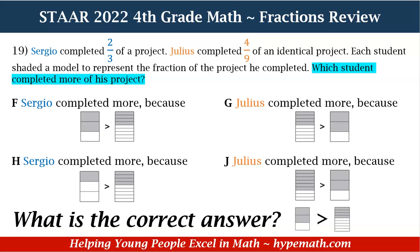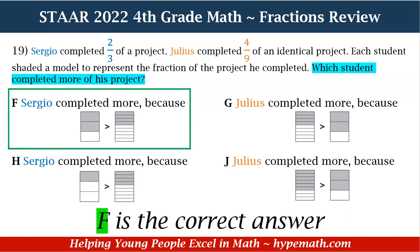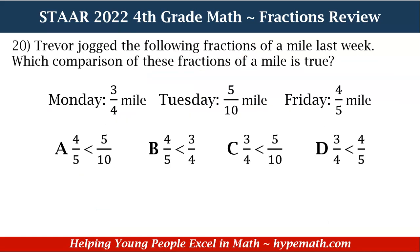Now that we know that, we need to discover what our correct answer is. We're going to look at our answer choices to see which one matches two-thirds is greater than four-ninths. If you said F, you are absolutely correct. Two-thirds is greater than four-ninths, so Sergio completed more because two-thirds is greater than four-ninths.